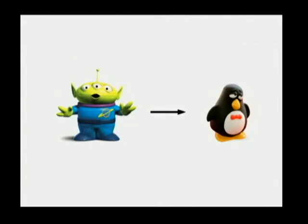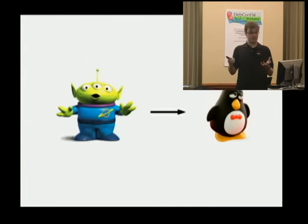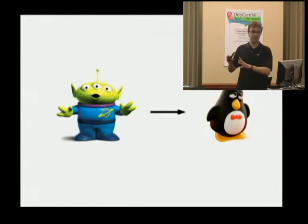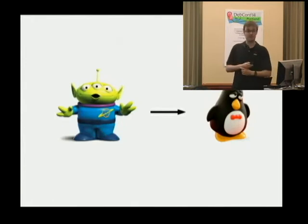The upgrade from Squeeze to Wheezy was a little bit scary, because all of a sudden I was upgrading from major versions of Apache — I think it was 2.0 to 2.2 — and then Postgres and Gearman and Django. Django was going from 1.2 to 1.4, so skipping one full major release. It was kind of scary because it was a big change, but it turned out to be actually pretty easy. Django has really good documentation for how to move from one version to the next, and everything else in the system pretty much worked.